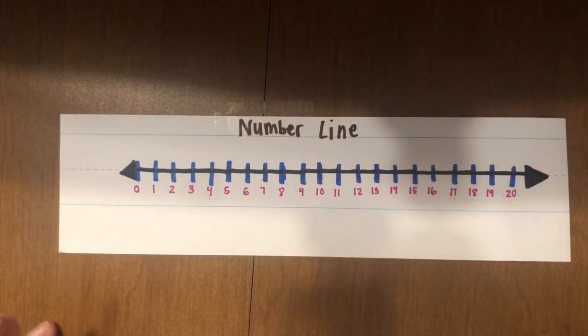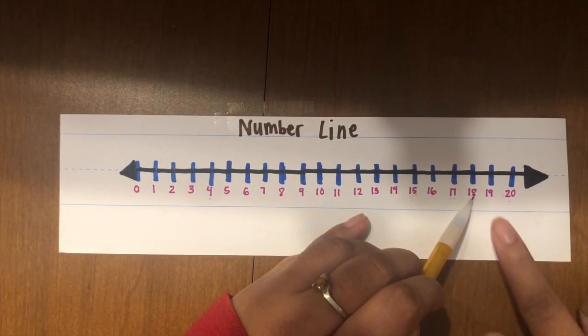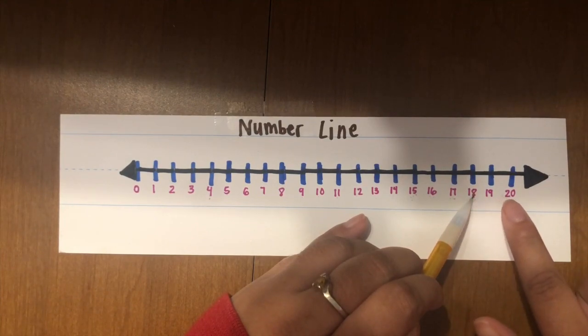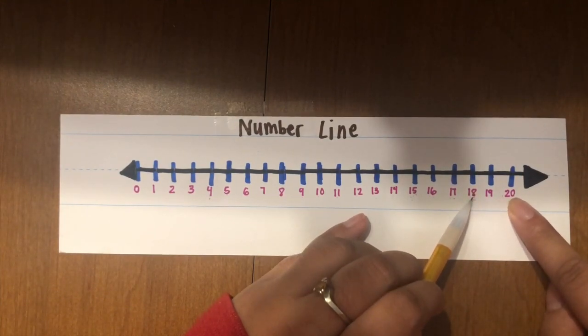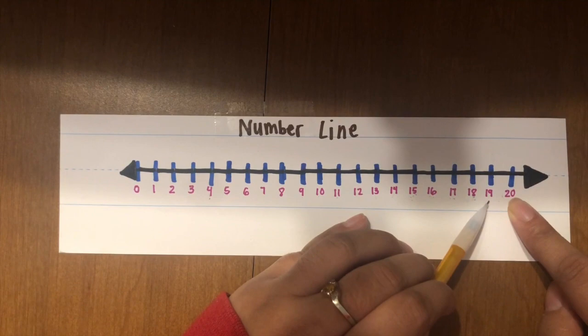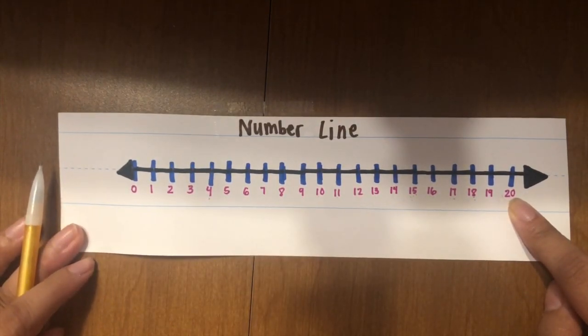Let's try another one. This time I want you to start at the number 18. Start at the number 18 and go all the way to 20. Eighteen, nineteen, twenty. Great job.